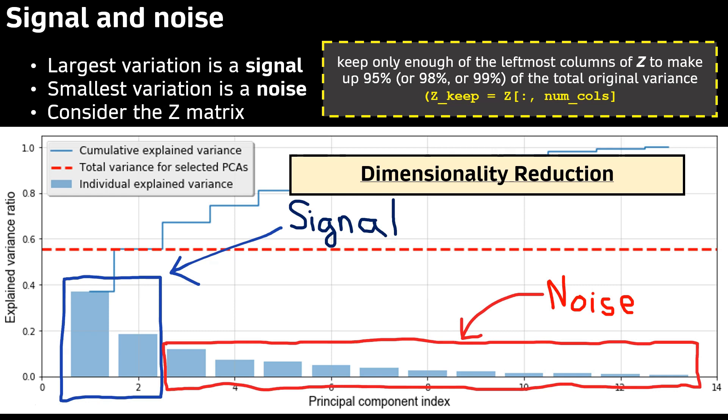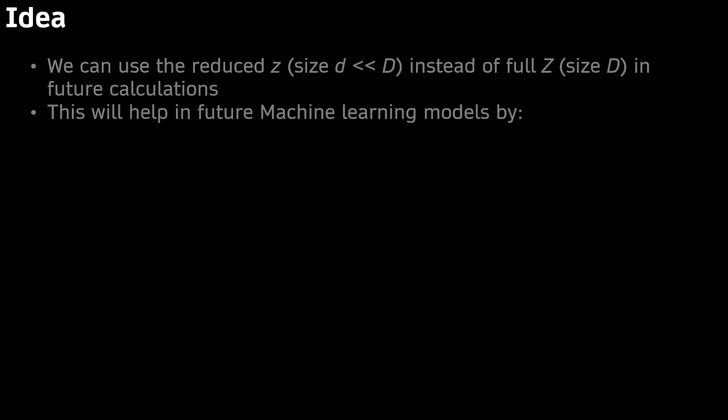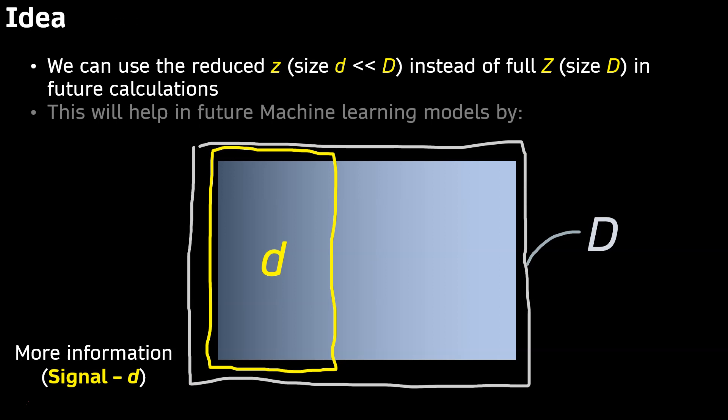The idea is we can use the reduced Z instead of full Z in future calculations. This will help us in the future for machine learning models to make predictions. Instead of having to learn over signal plus noise, it can just learn from signal.